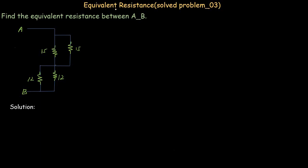In this video lecture we are going to discuss another problem related to series-parallel circuits, in which we are asked to find out the equivalent resistance between point A and B. We have a problem in which four resistors are connected, and we need to find the equivalent resistance between point A and point B. Before going towards the resolution of this problem, let's analyze this network briefly.